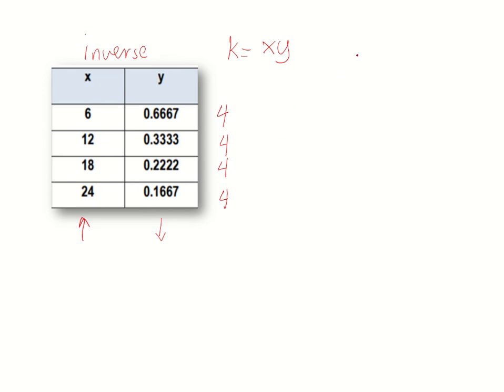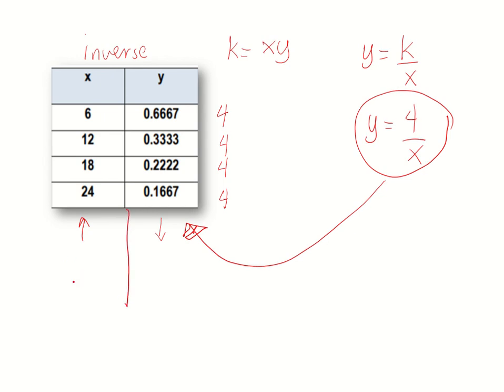Now, the constant is 4, then we can now write the equation of inverse variation. Following this equation, y is equal to k over x, we simply replace k with 4 over x. This is now the equation that represents this table of values, and this is useful when you are asked to solve for bigger values of x. So let's say we have here 100, and so on.